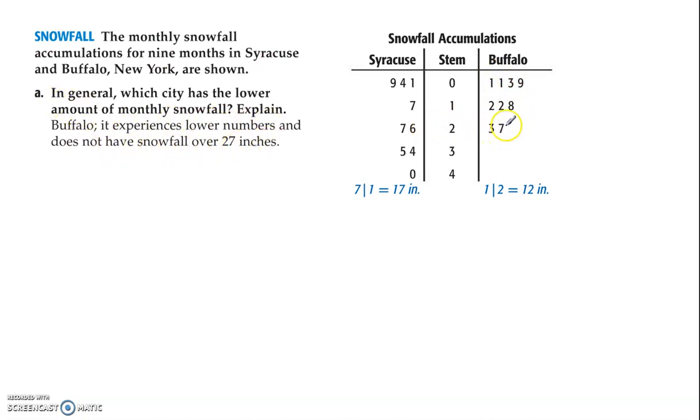And it does not, the greatest amount of snowfall is 27. It does not have anything above that, whereas Syracuse has snowfall in the 30s and even 40 inches. Which city has more varied amounts? This is a word you're going to have to look for.